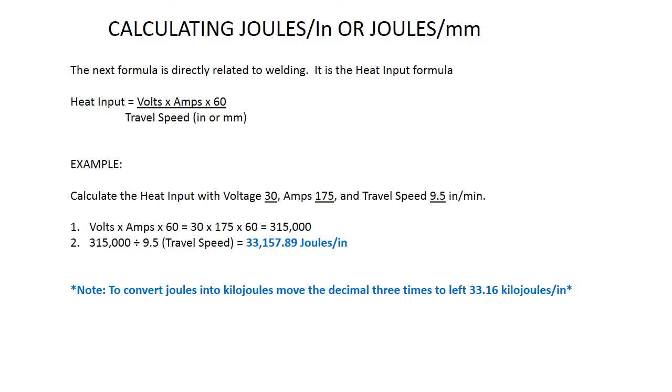...you take 315,000 divided by 9.5, which equals 33,157.89 joules per inch. Note: To convert joules into kilojoules, move the decimal three times to the left.